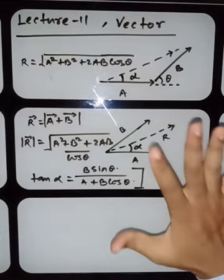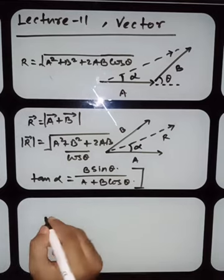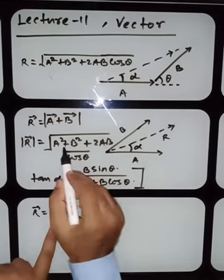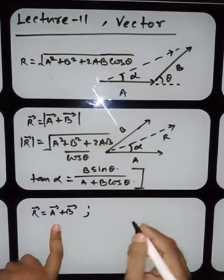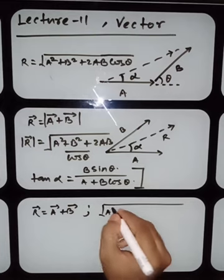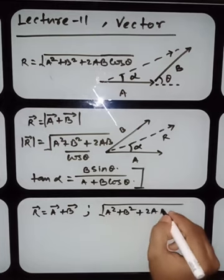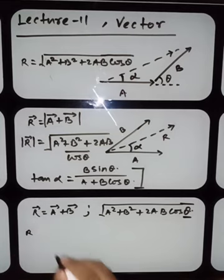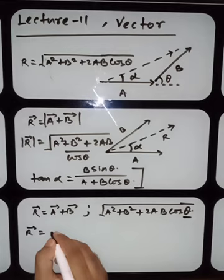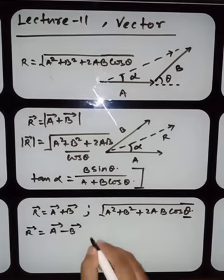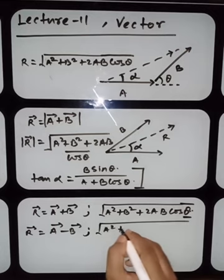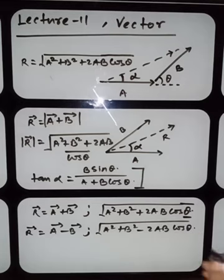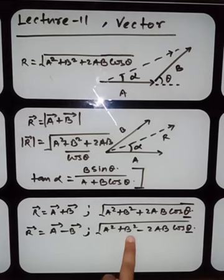Remember: if R = a + b, then |R| = √(a² + b² + 2ab cosθ), where theta is the angle between the two vectors. If the resultant is a − b, then |R| = √(a² + b² − 2ab cosθ), where theta is the angle between vector a and vector b.